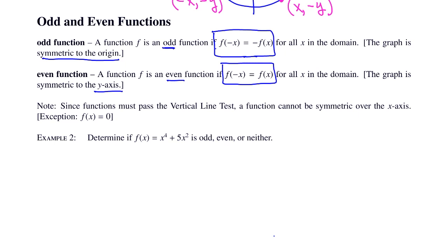Notice that because we're using functions, they have to pass the vertical line test, so no two x's can be the same. Because of this, in general no functions are symmetric to the x-axis. The one exception is the straight line y equals zero.